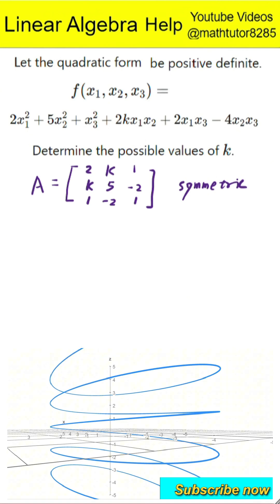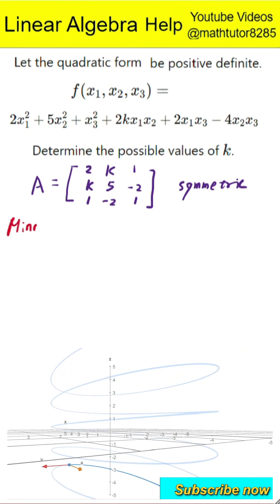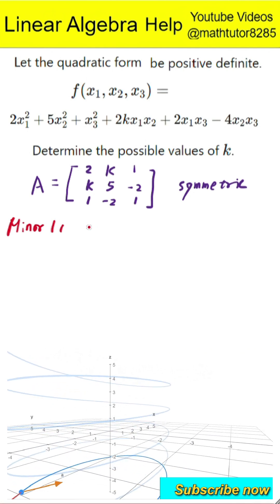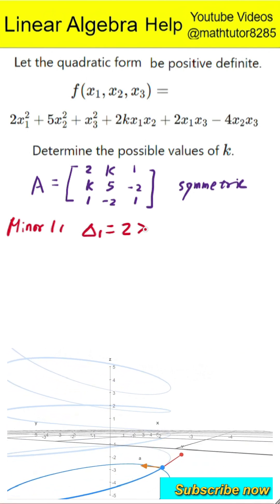Next step is to compute the leading principal minors. First, the 1x1 principal minor is simply the top left element of the matrix, which is 2, that is clearly positive.